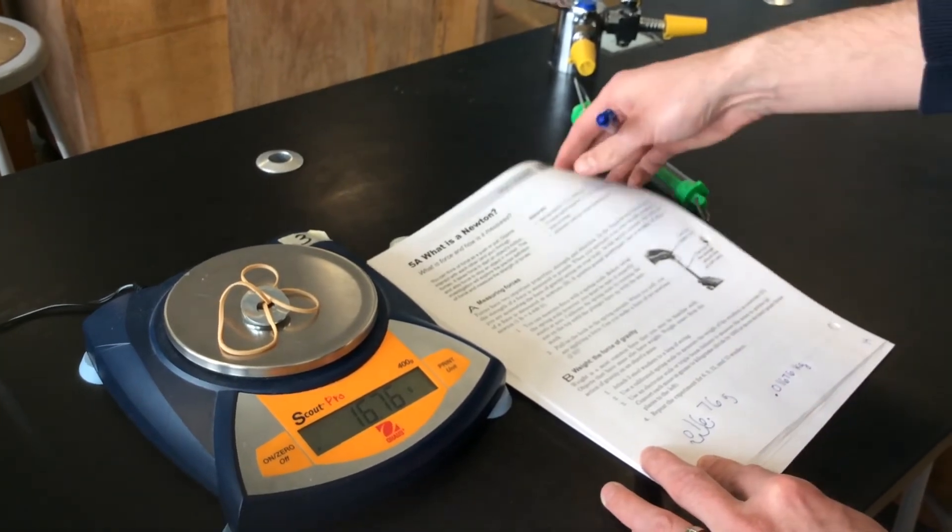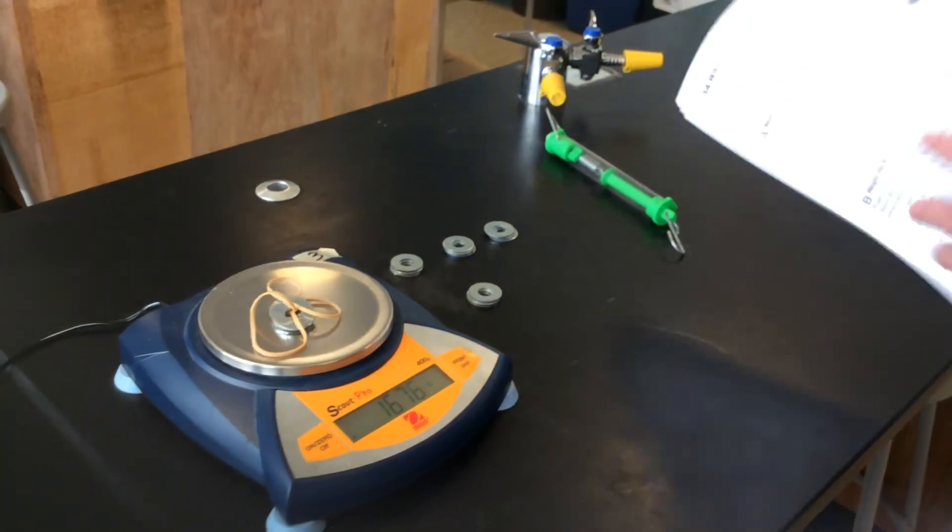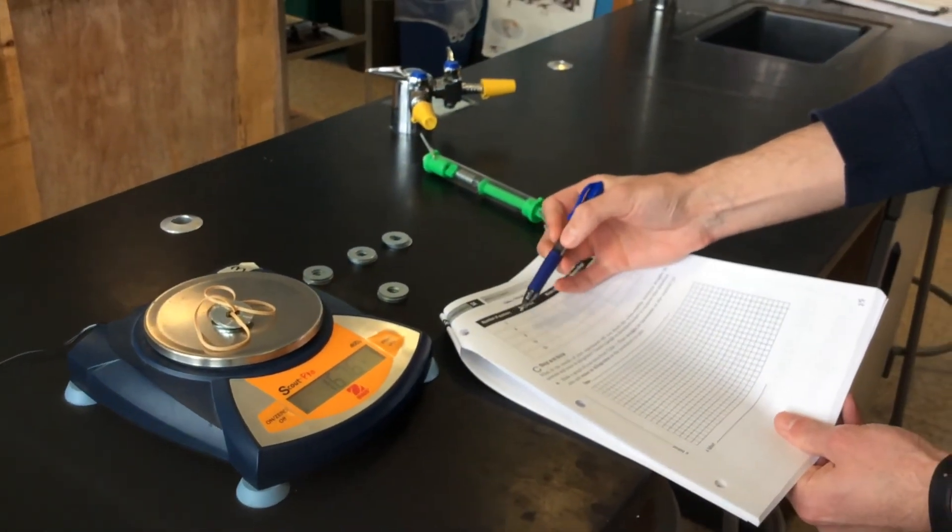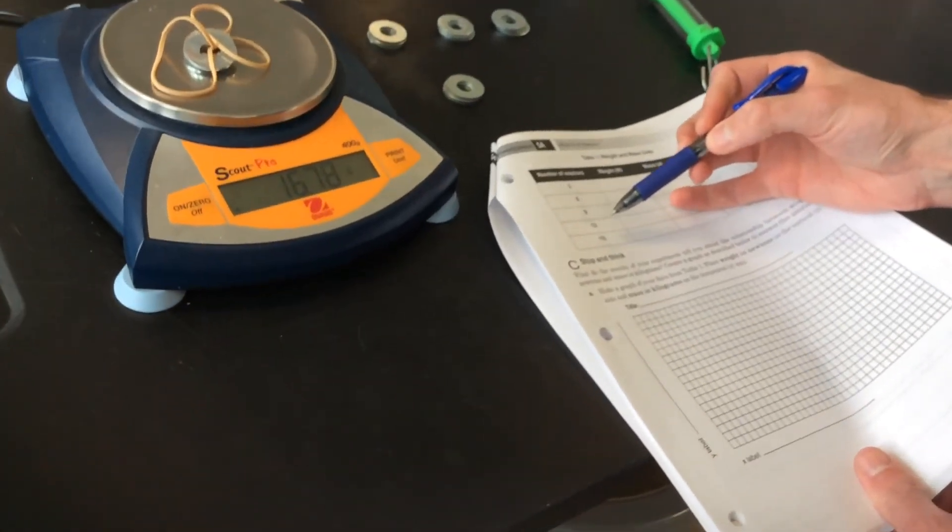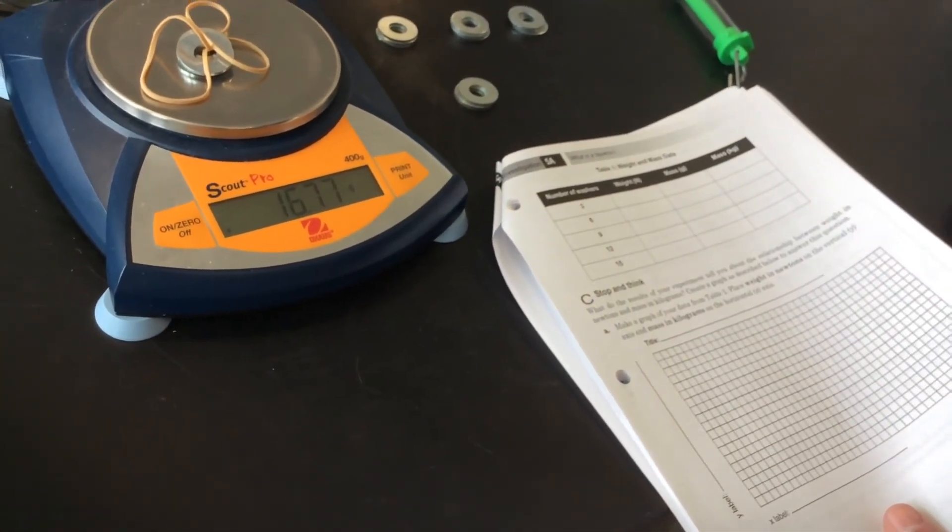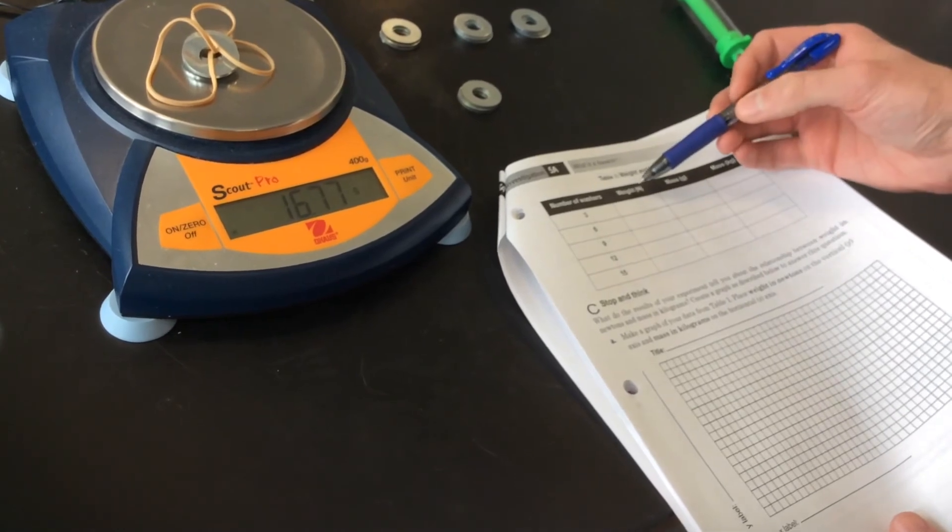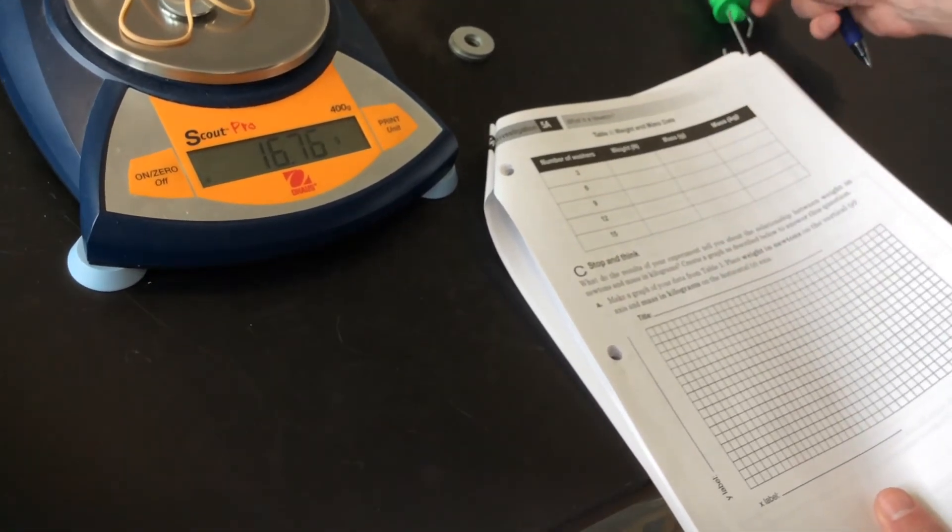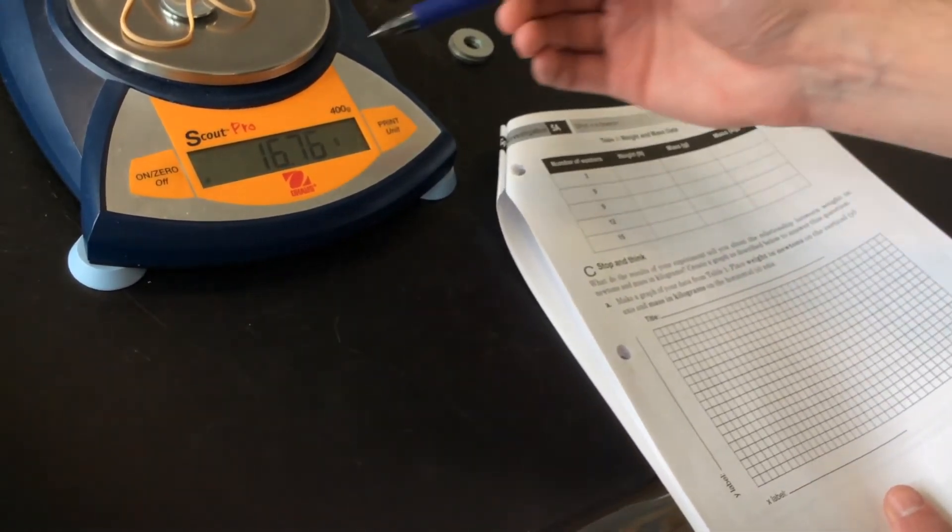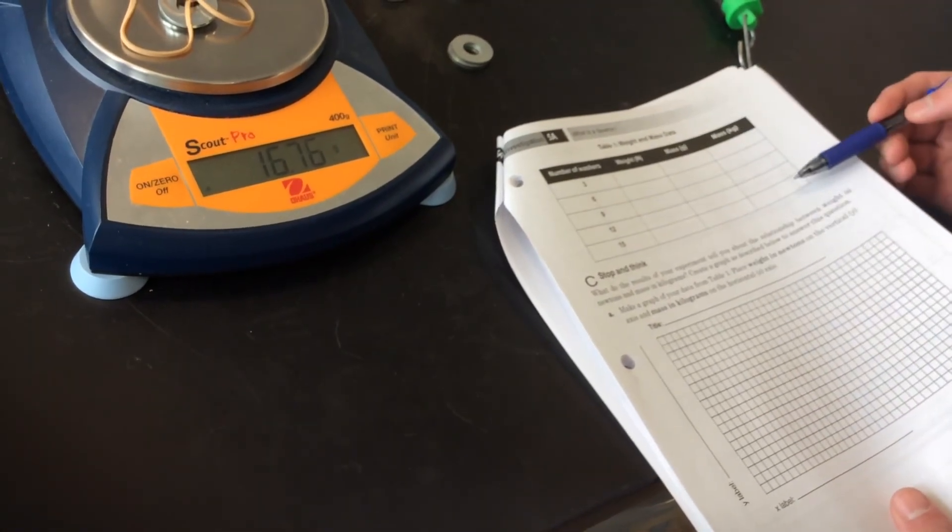What you're going to be doing, then, is adding washers on. You're going to go 3, 6, 9, 12, and 15 washers. Recording the weight in Newtons from the spring scale. The mass in grams from the balance. And then converting to kilograms.